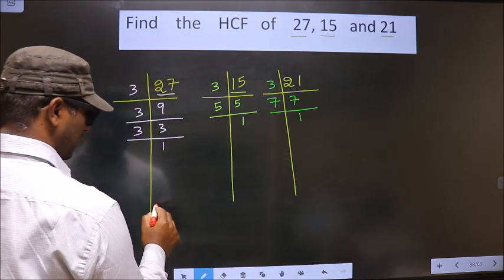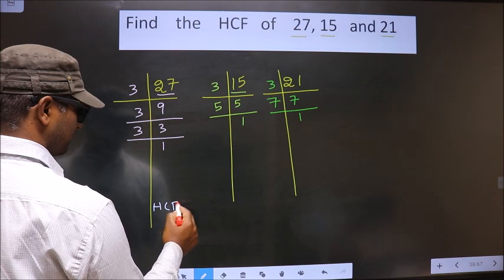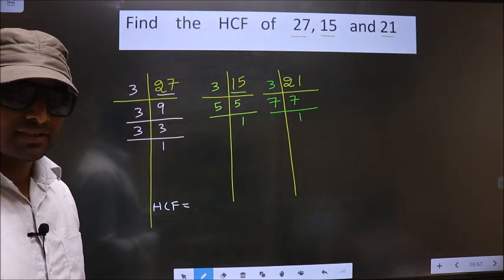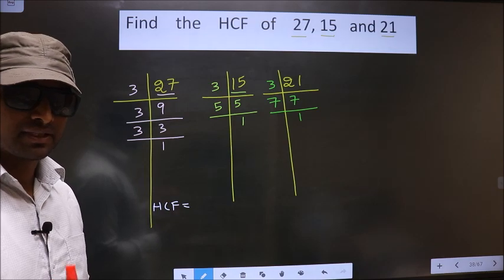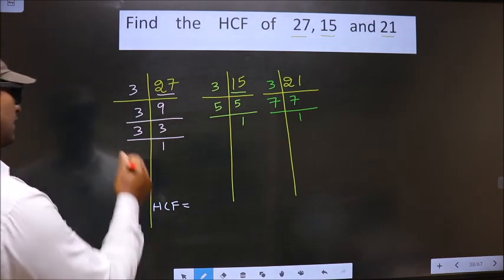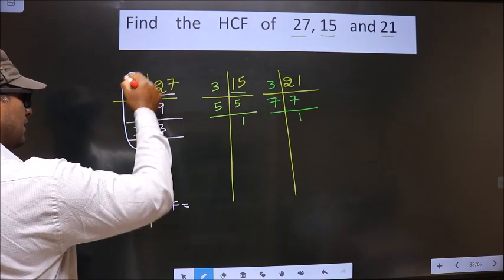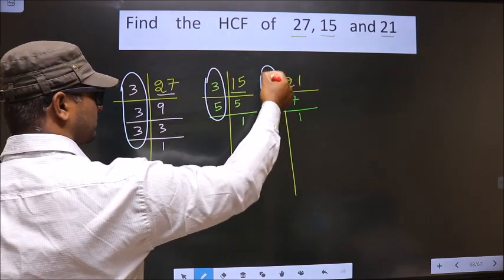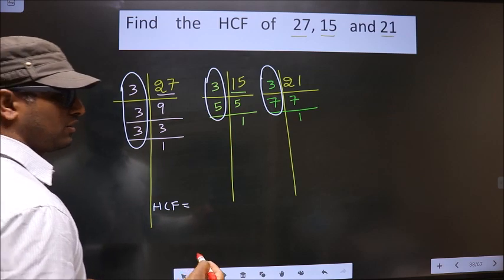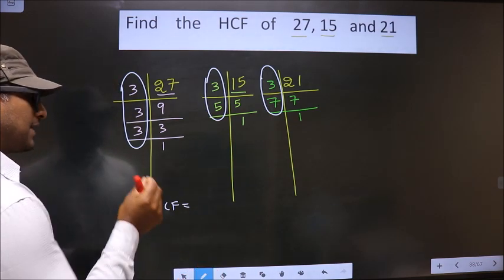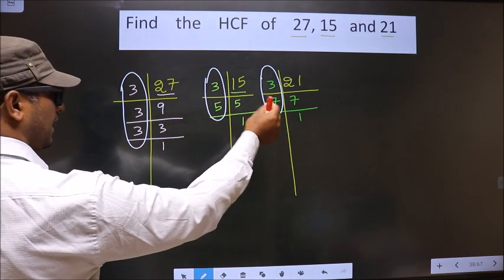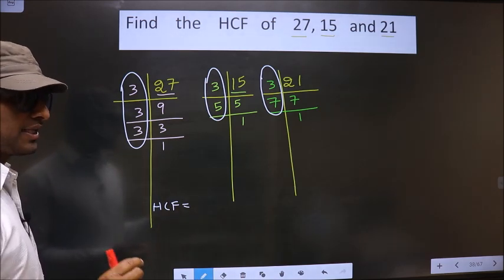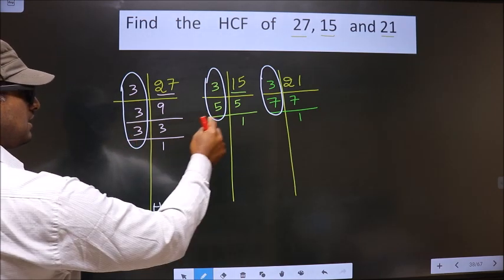So now our HCF is the product of numbers that are present here and here and here. Now we should look for the numbers that are present here, here and also here. I repeat, we should look for the numbers that are present in these 3 places.